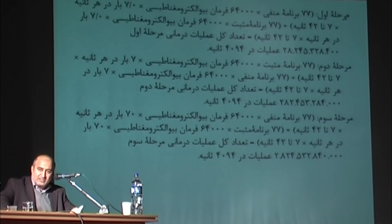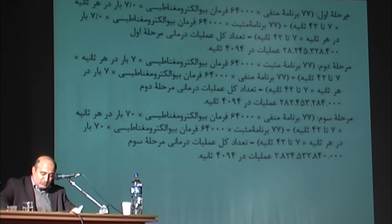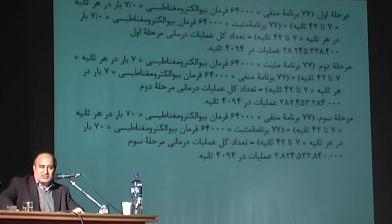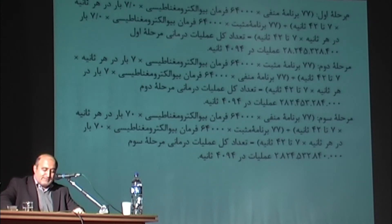Phase 2: 77 positive programs multiplied by 64,000 bioelectromagnetic commands multiplied by 7 times per second multiplied by 7 to 42 seconds, plus 77 negative programs multiplied by 64,000 bioelectromagnetic commands multiplied by 7 times per second multiplied by 7 to 42 seconds, equals a total number of second phase treatment operations of 282,453,248,000 in 4,094 seconds.